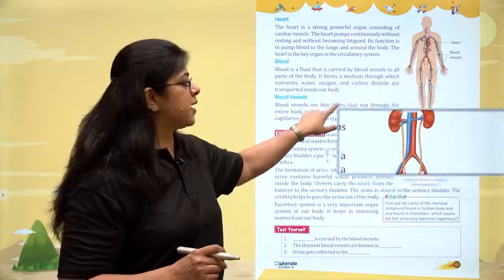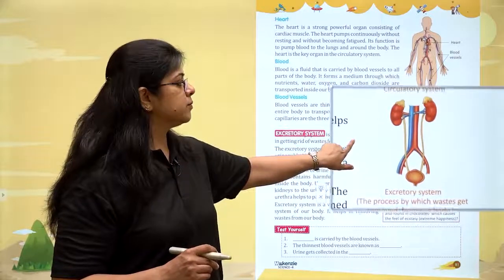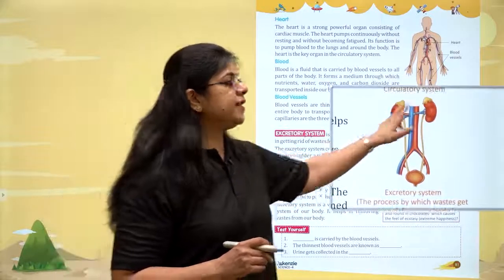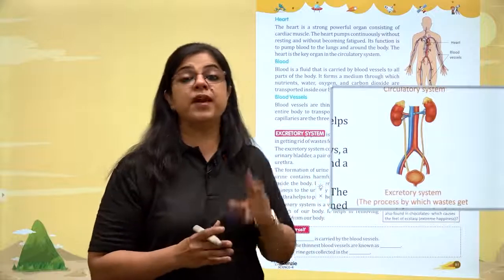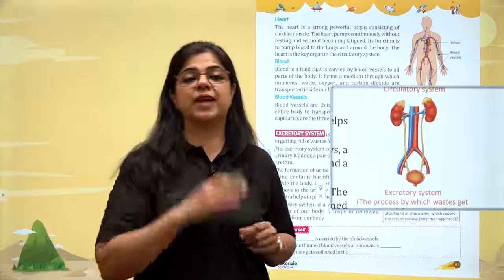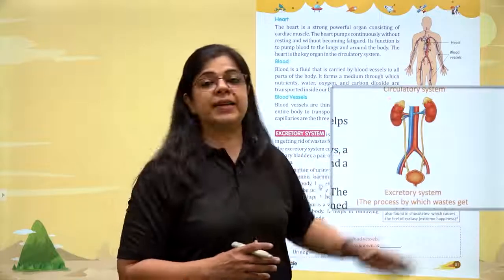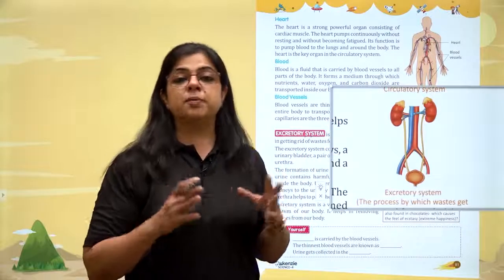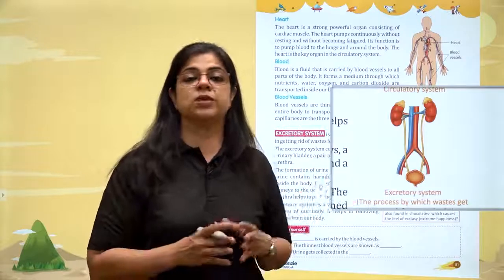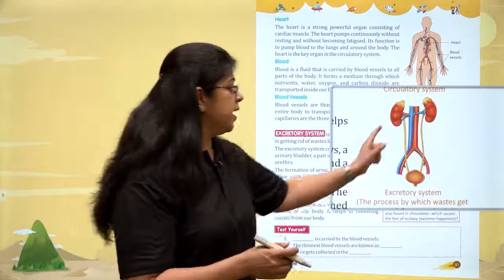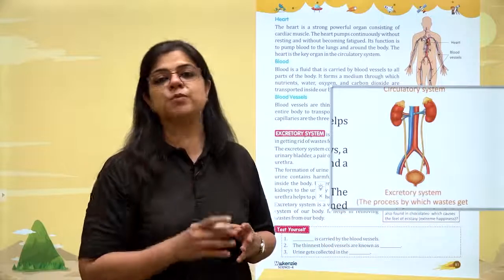The excretory system, as we can see, has got the kidneys on top. These kidneys are bean shaped. We have two kidneys on either side of our backbone. These kidneys filter the blood from all the waste material. Aur jo yeh waste material hota hai, isko collect karke in chhoti tubes ke through, jinko ureter bolte hain,